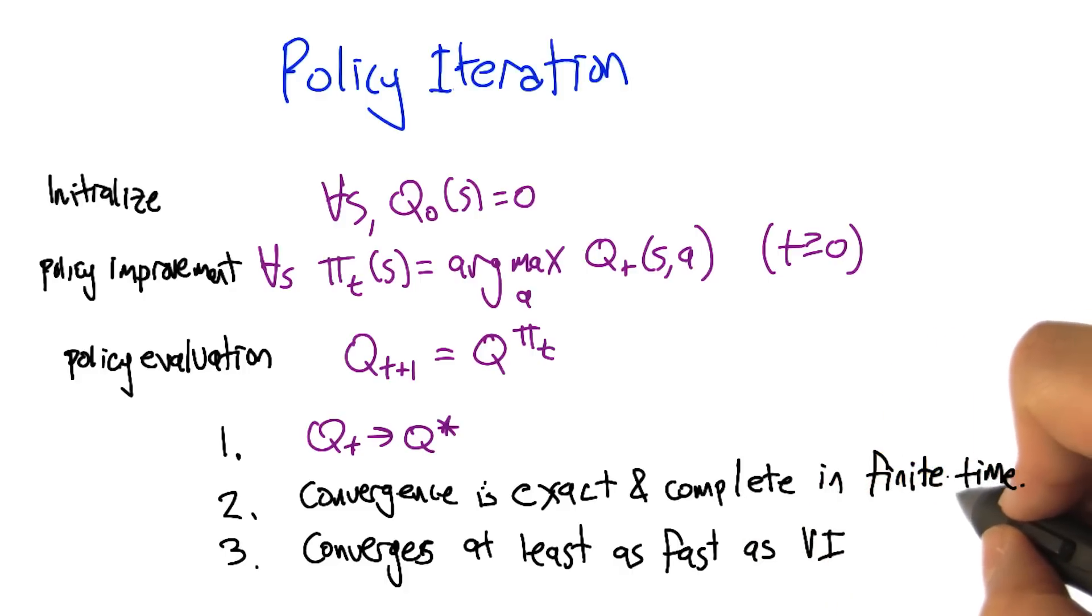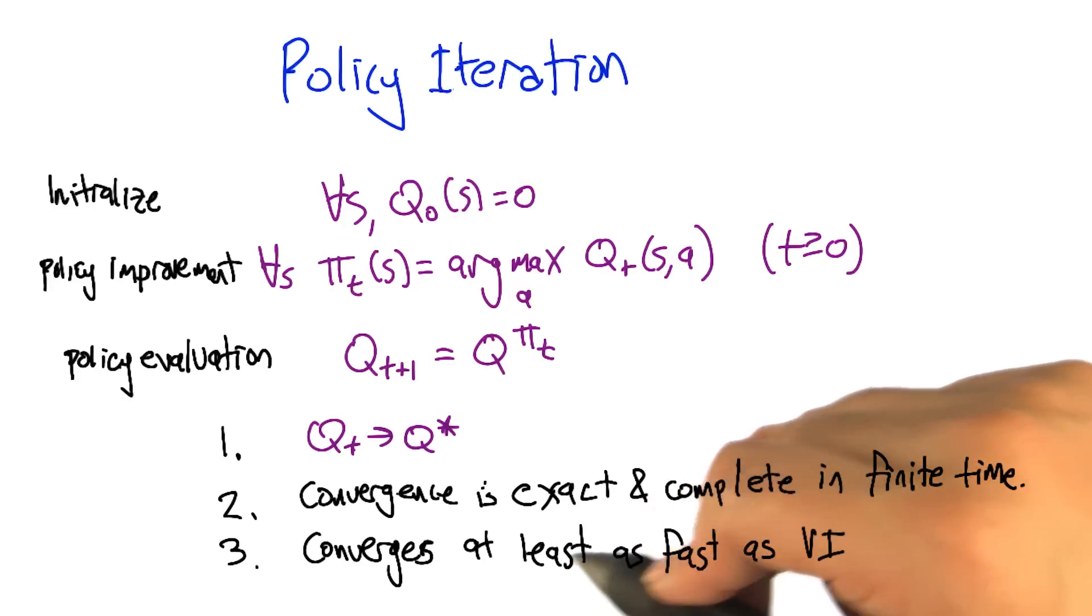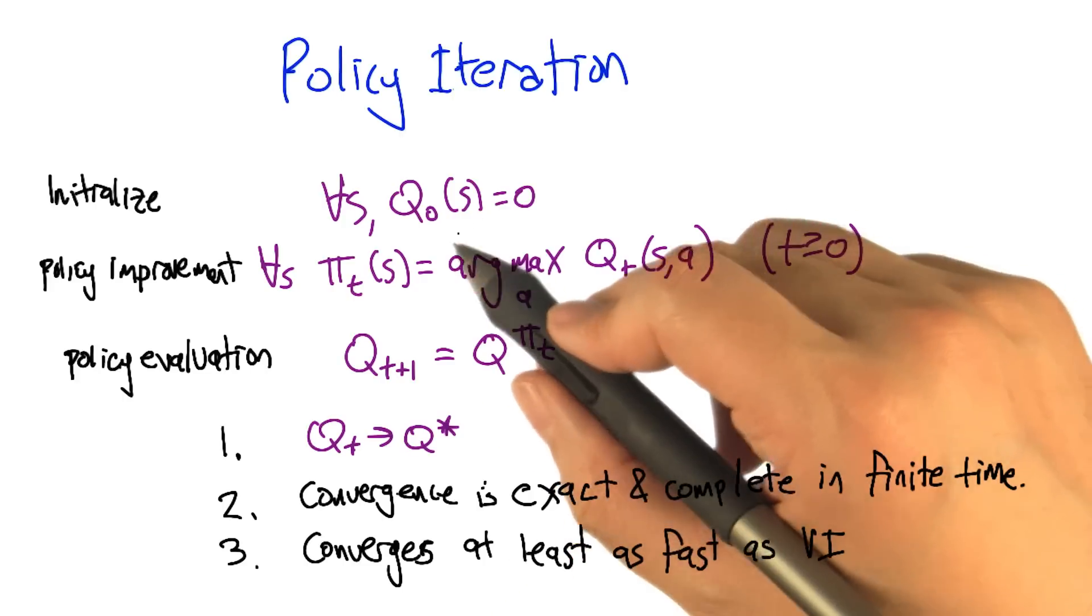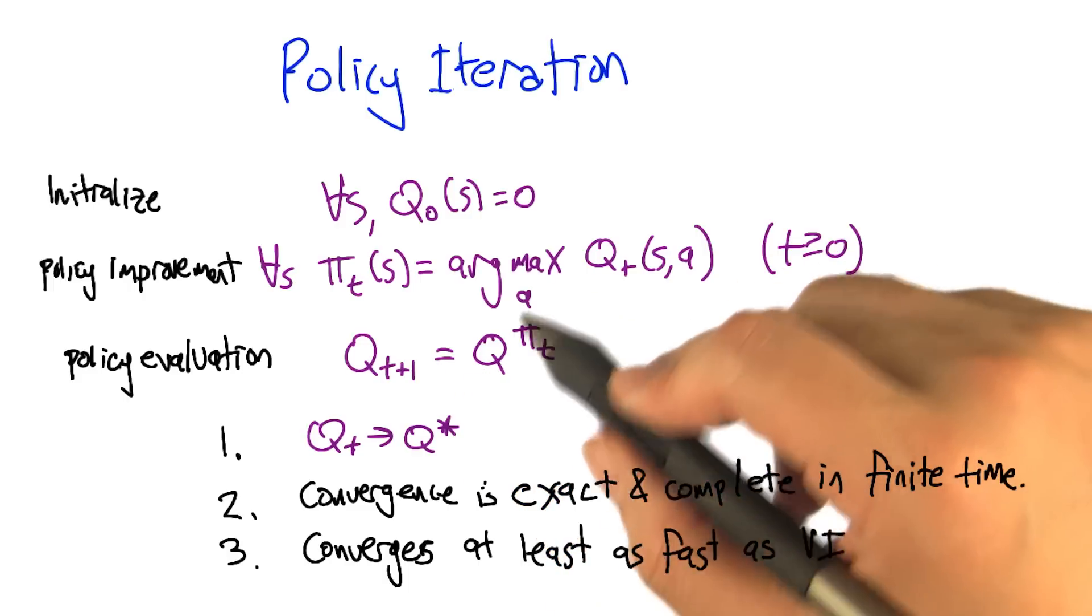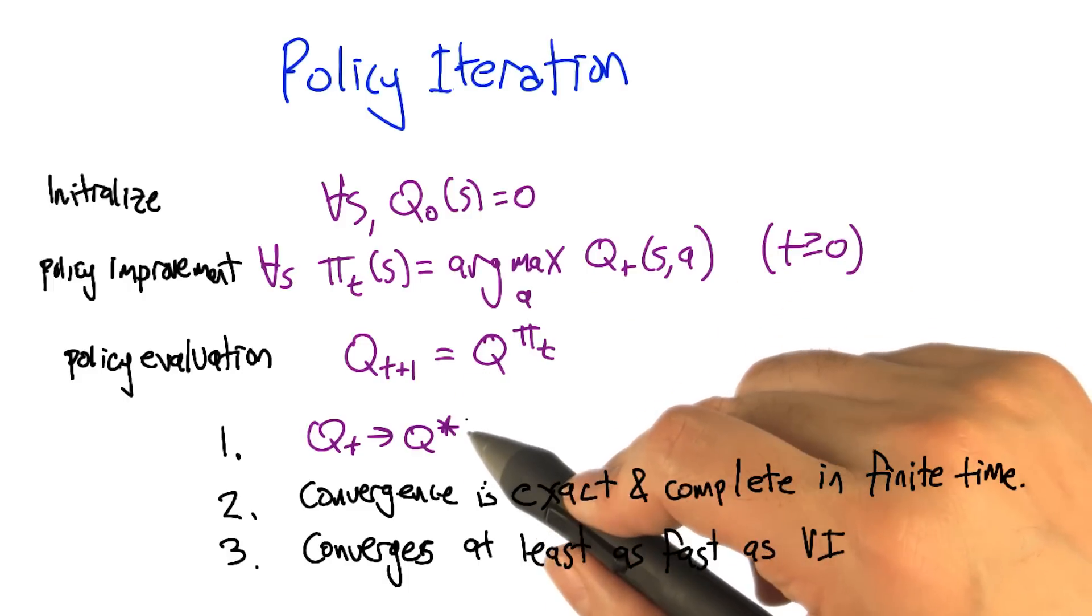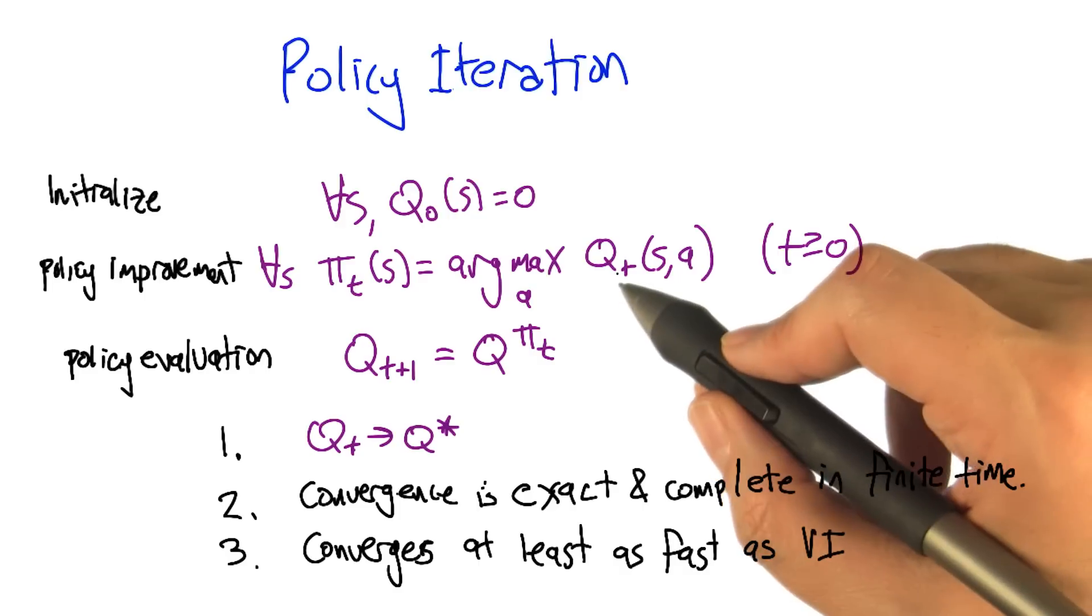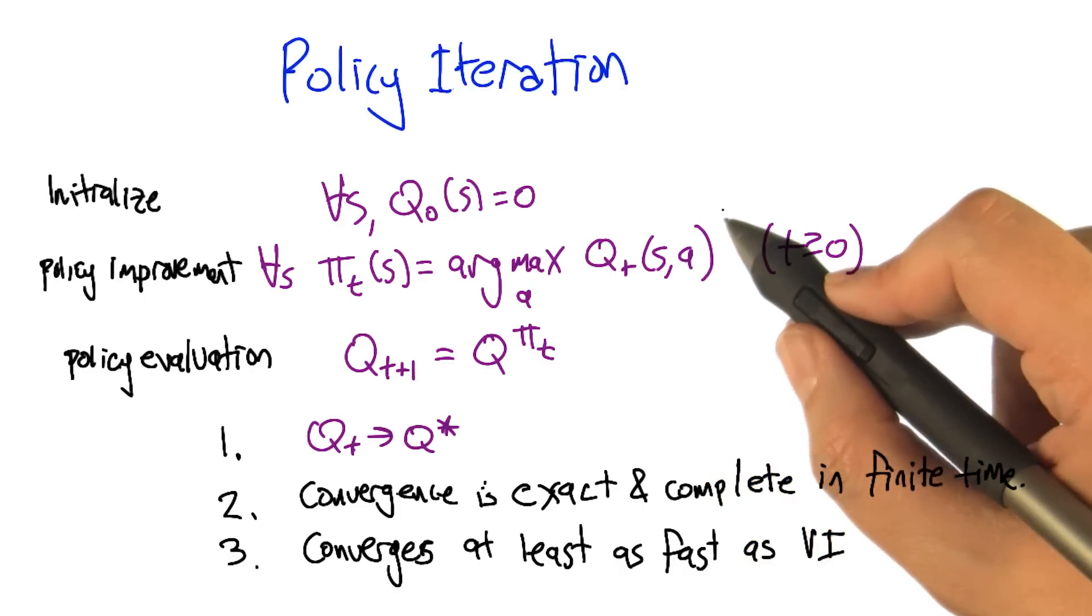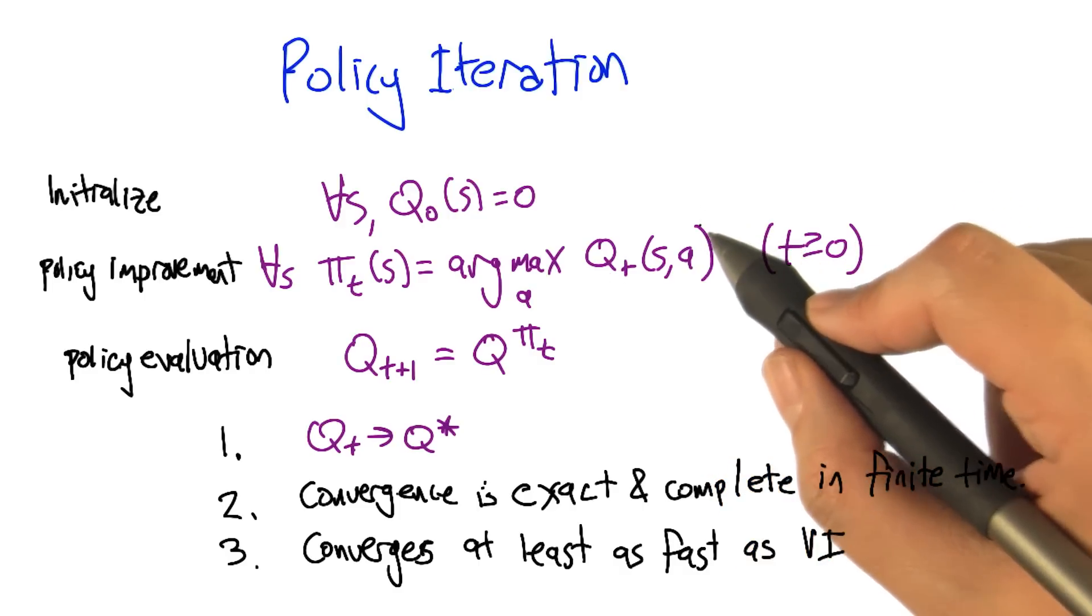Though I guess that was kind of true of value iteration as well. And it converges at least as fast as value iteration in that if, at any point, we sync up the Q functions, we start value iteration and policy iteration from the same Q function, then each step that policy iteration takes is moving us towards the optimal Q function, no more slowly than value iteration does.